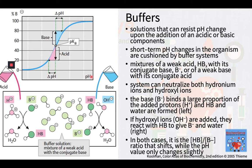A buffer is a solution that can resist pH change upon the addition of acidic or basic components. It is able to neutralize small amounts of added acid or base, thus maintaining the pH of the solution relatively stable. Short-term pH changes in the organism are cushioned by buffer systems. These are mixtures of a weak acid, labeled here as HB, with its conjugate base, indicated here as B- ion, or of a weak base with its conjugate acid. This type of system can neutralize both hydronium ions and hydroxyl ions.